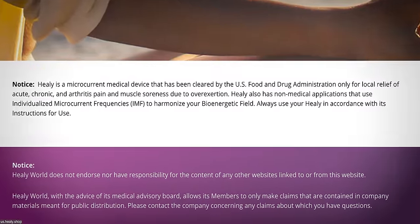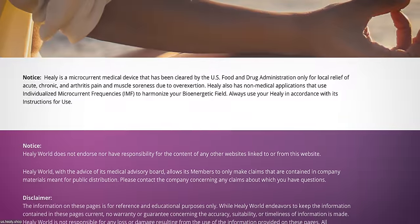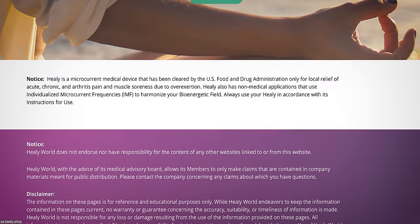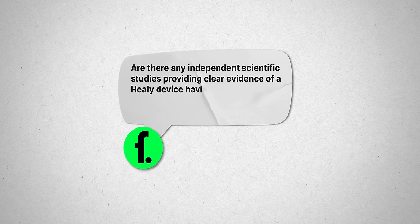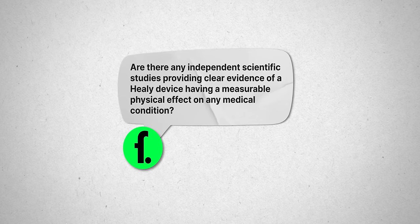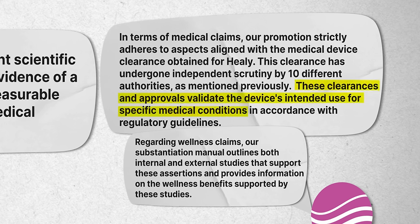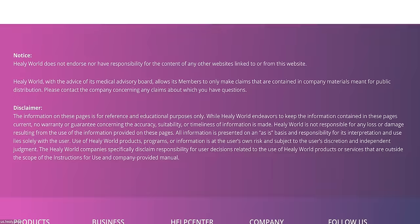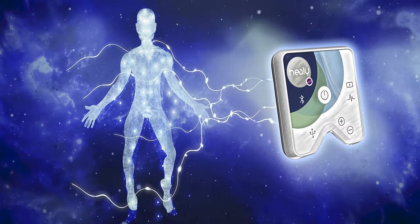Unfortunately, this means that Healy has clearances in both the US and EU. Healy uses these clearances and classifications to their advantage to further the medical image of the device they are selling. We specifically asked Healy to provide us with any independent scientific studies providing clear evidence of a Healy device having a measurable physical effect on any medical condition. They did not provide any, of course. But they did again refer to their clearances as validators of their claims. In short, that really seems to be their strategy - disclaimers and clearances. But is that enough to make all this legal?